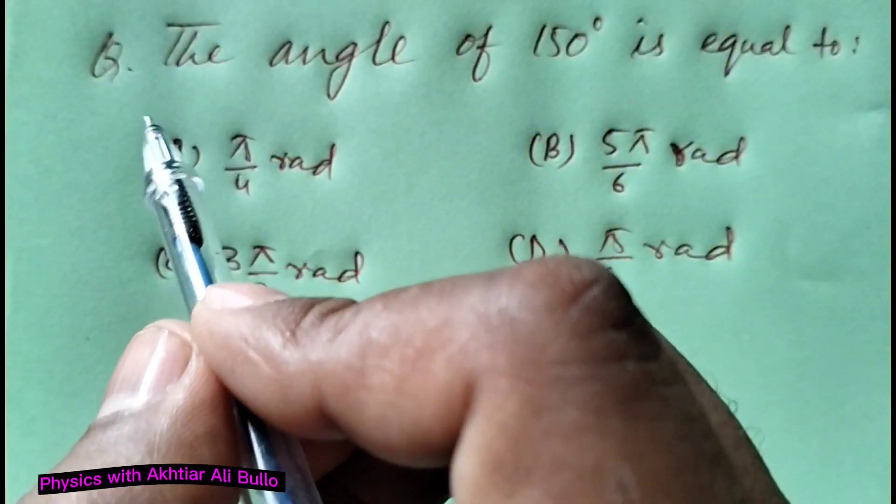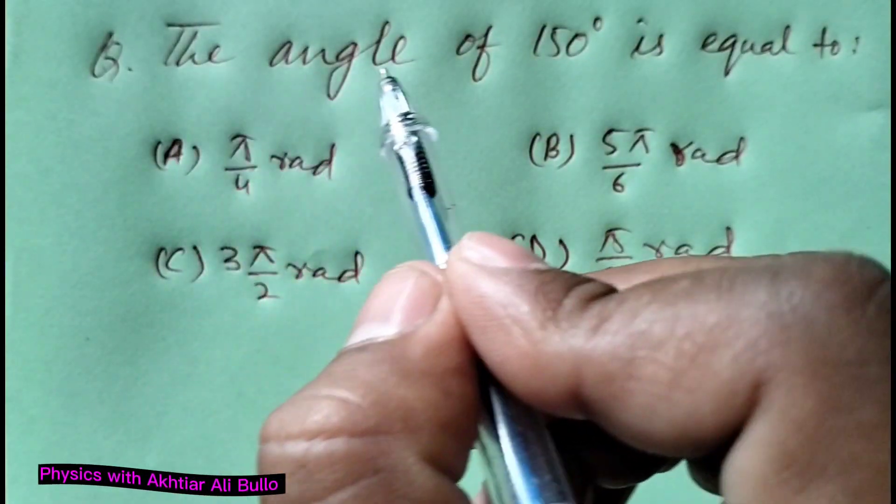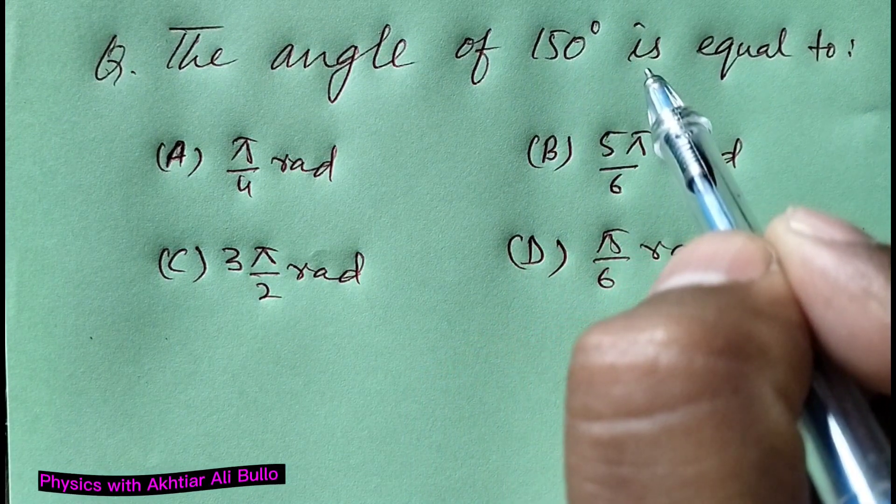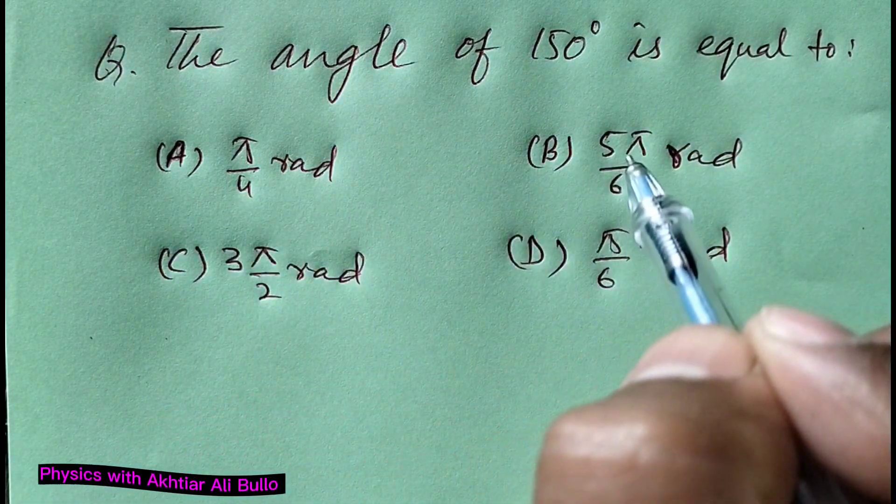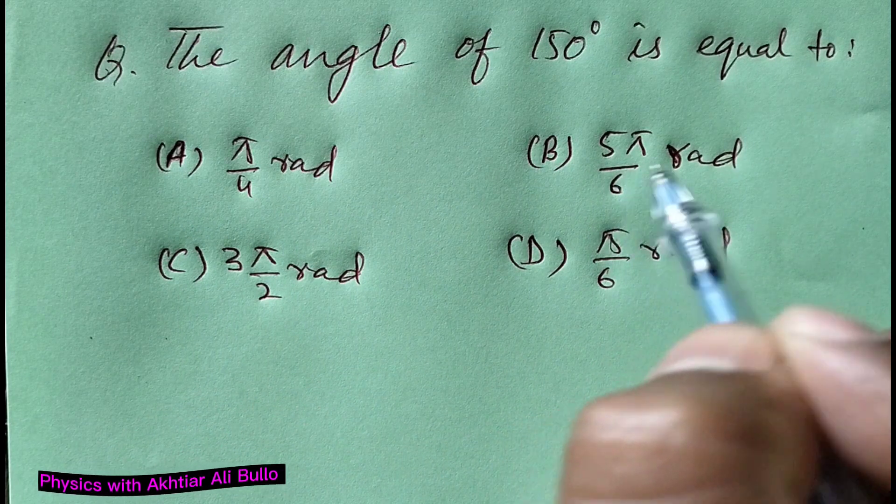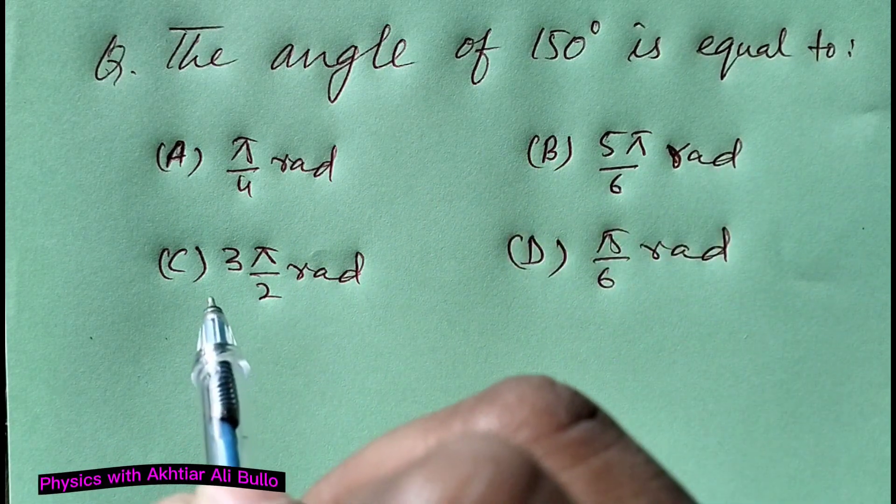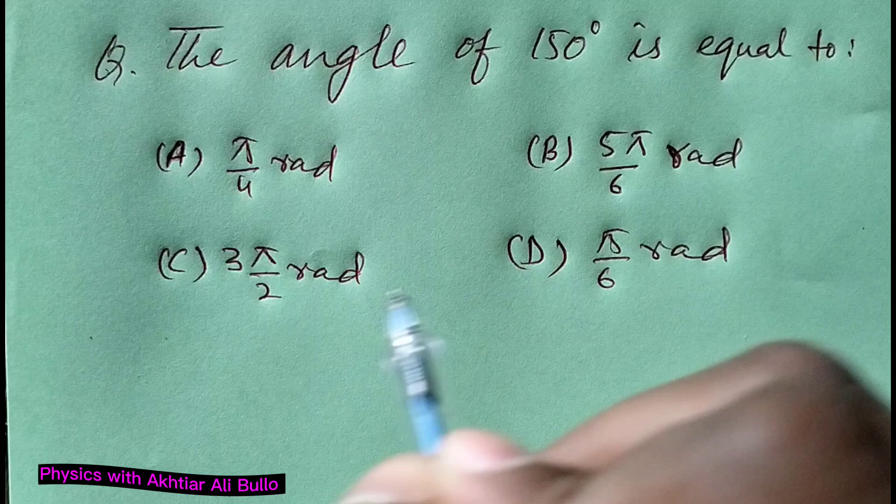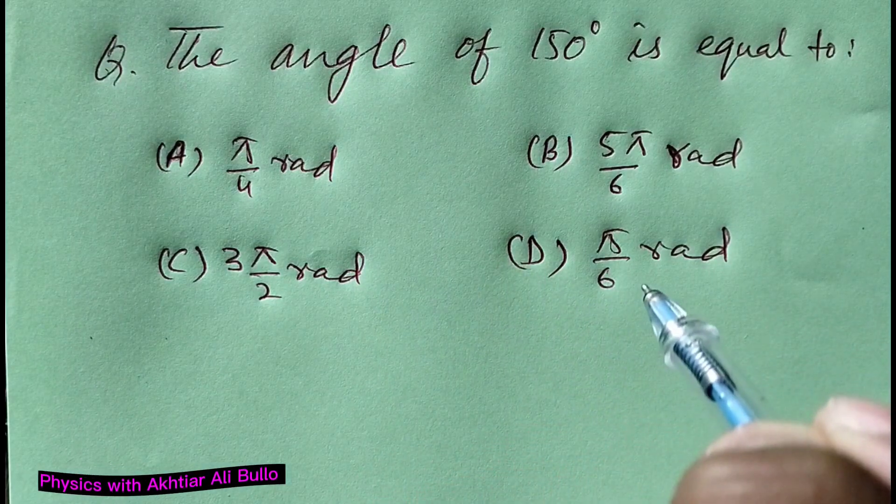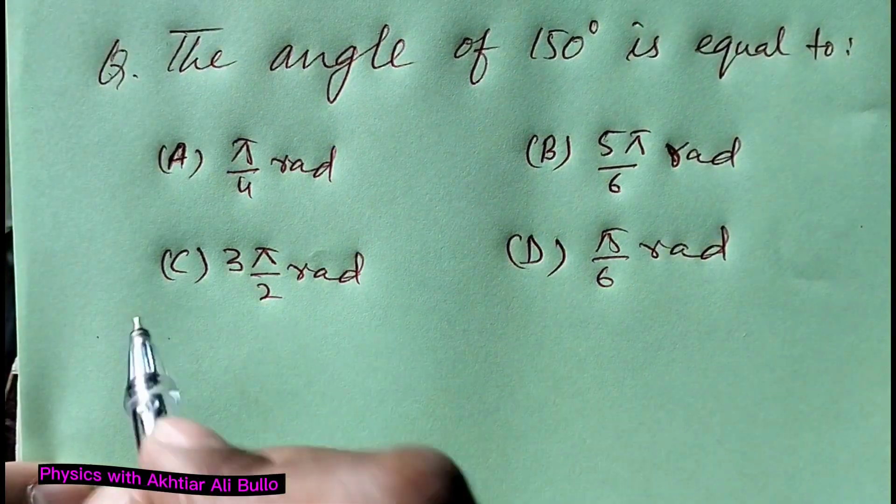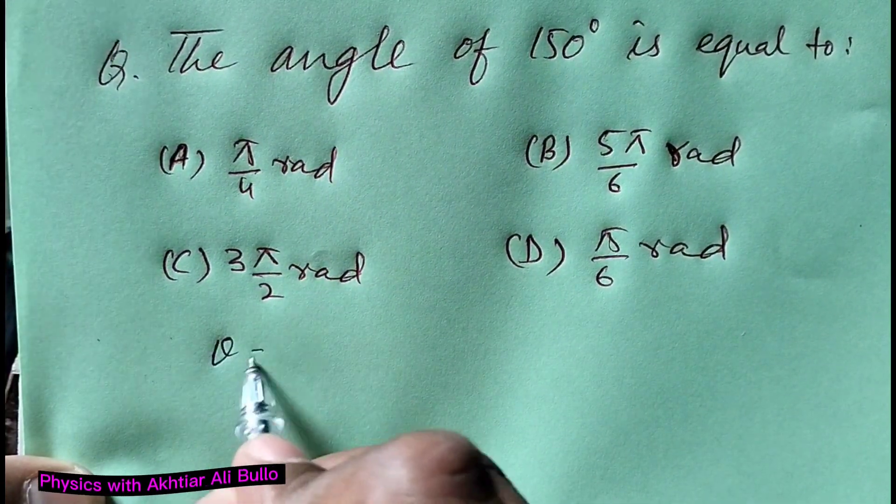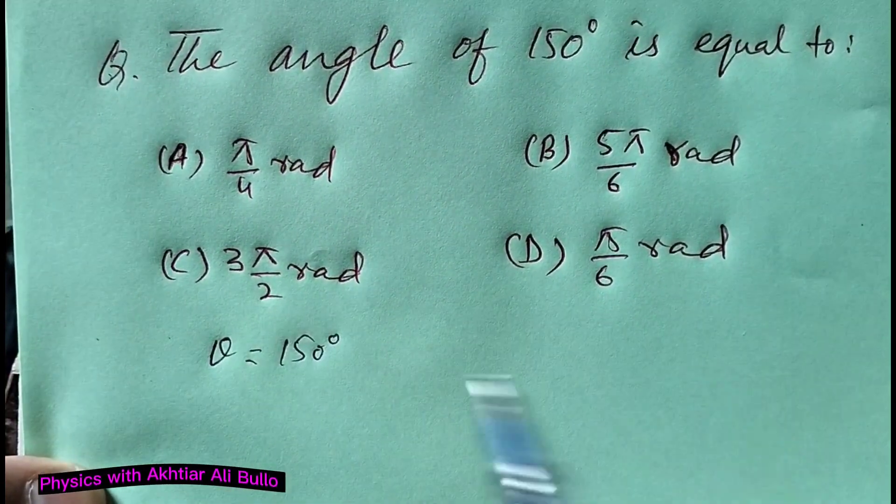The question is: the angle of 150 degrees is equal to (A) π/4 radian, (B) 5π/6 radian, (C) 3π/2 radian, or (D) π/6 radian. The angle is given as 150 degrees.